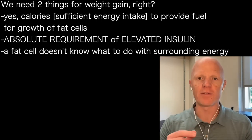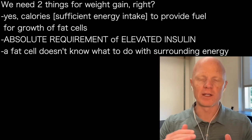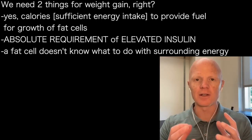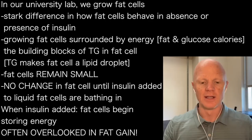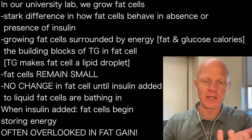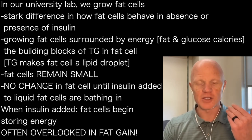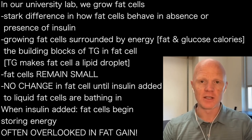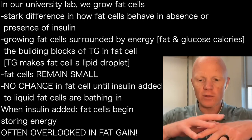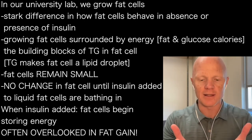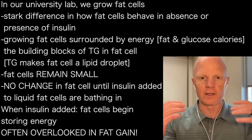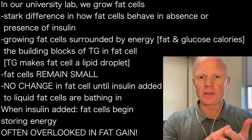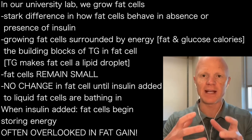What is too often overlooked is the absolute requirement of elevated insulin. A fat cell does not inherently know what to do with the energy surrounding it. We are regularly growing fat cells on little Petri dishes, and it is stark to see the difference in how fat cells behave in the absence or presence of insulin. As we grow the fat cells across the plate, they are surrounded with energy — calories, fat, and glucose — which are the two building blocks for triglycerides within the fat cell itself.